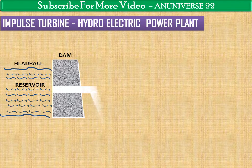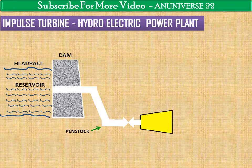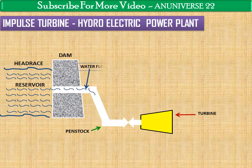This is the penstock. It is a passage used to carry the water from the reservoir to the turbine inlet. It is connected at the inlet of the turbine, and when water starts to flow through the penstock from the reservoir.